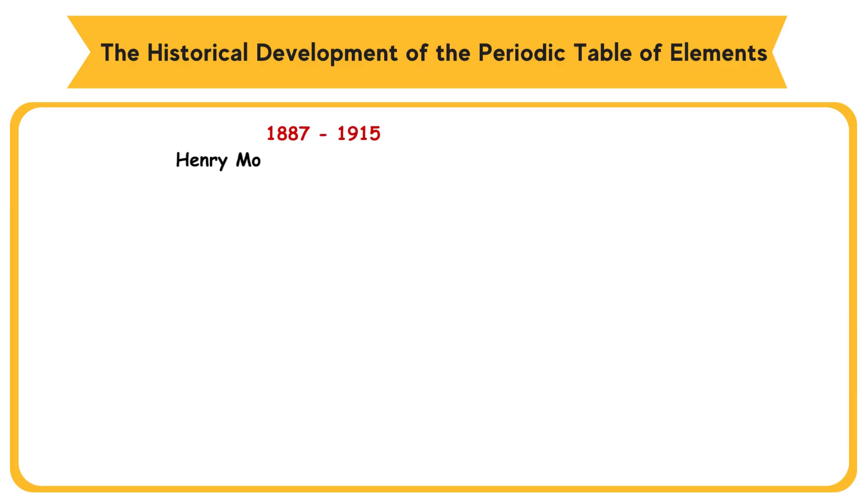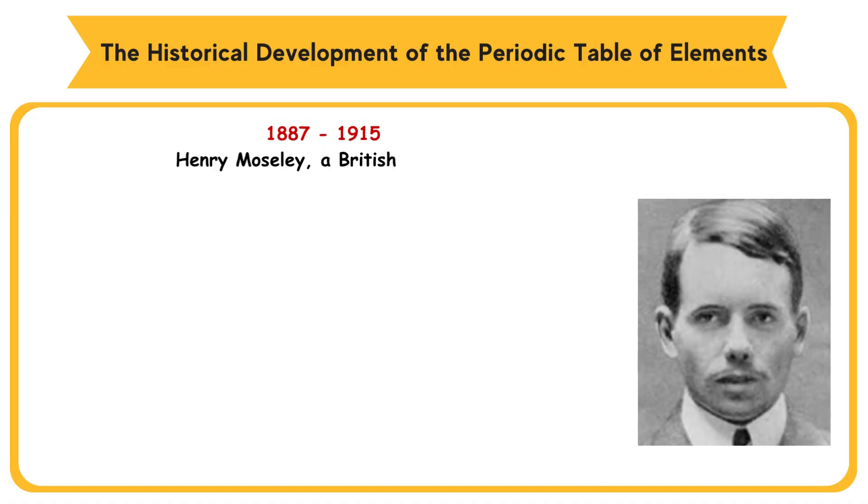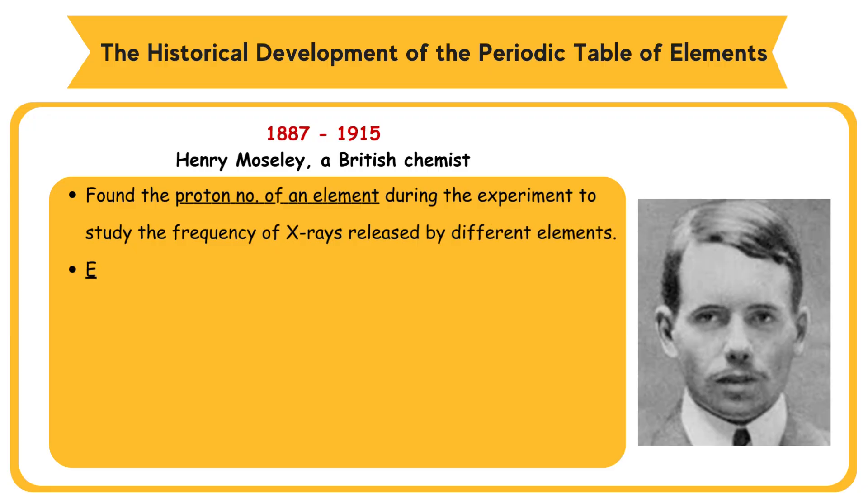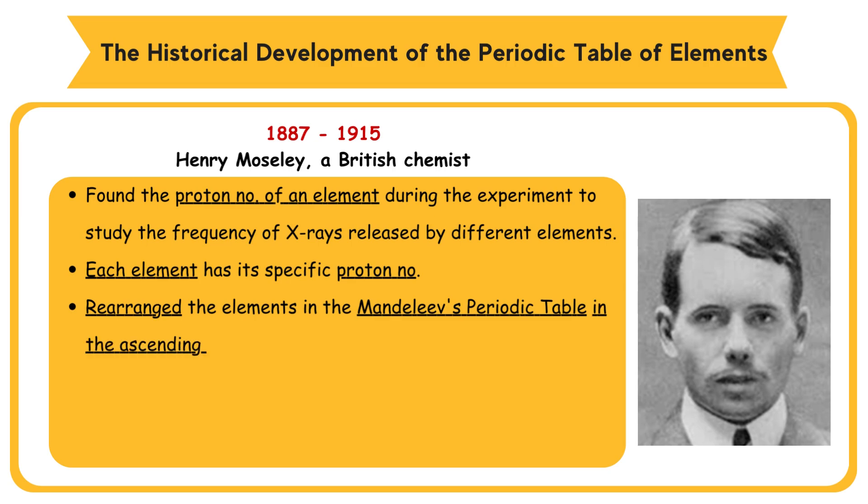1887-1915, Henry Moseley, a British chemist, he found the proton number of an element during the experiment to study the frequency of X-rays released by different elements. Each element has its specific proton number. Rearranged the elements in Mendeleev's periodic table in the ascending order of proton number. Left empty spaces for undiscovered elements.